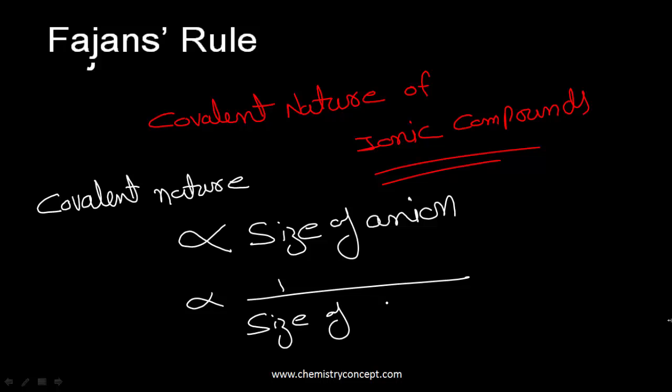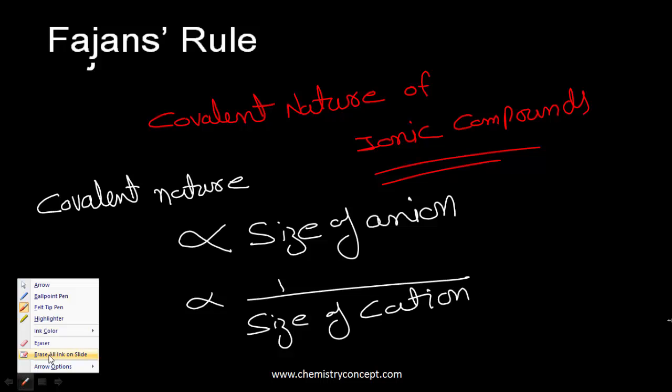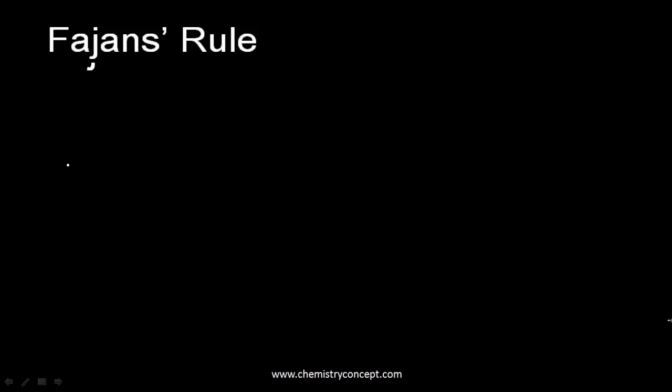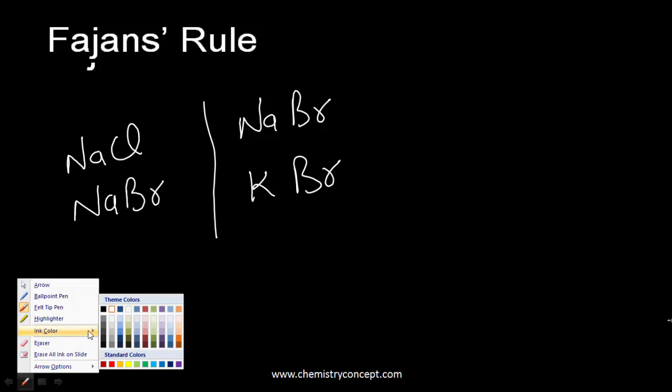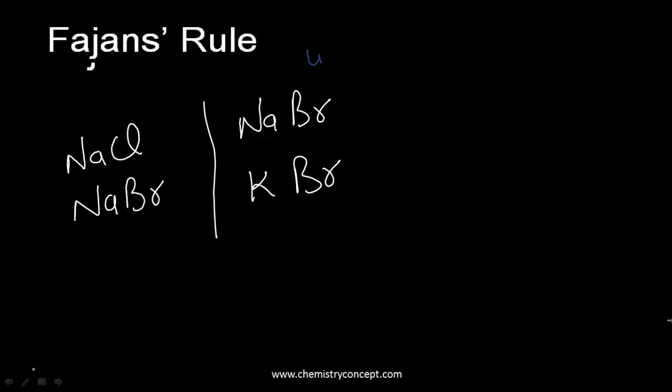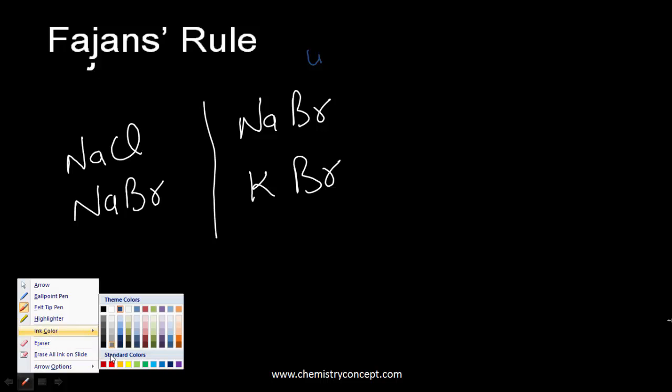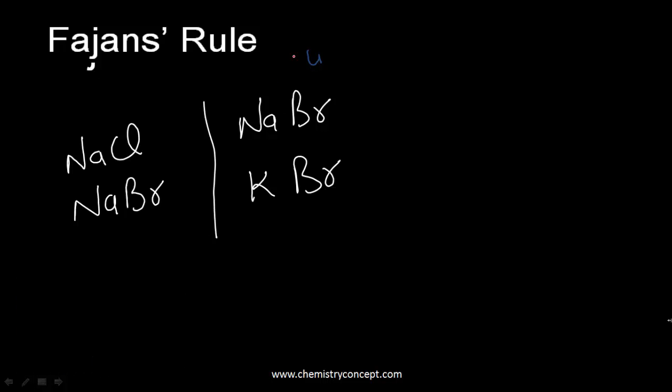Let's understand this with an example. We have NaCl and NaBr, and on the other side we have NaBr and KBr. We have to find out which one is more covalent, or you can say less ionic.